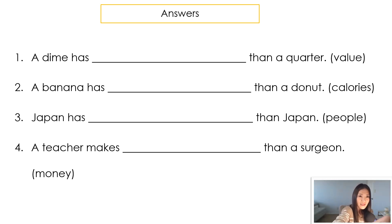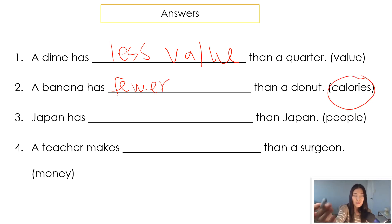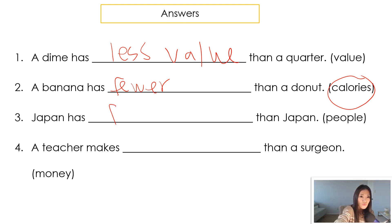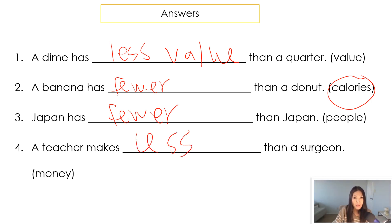Number one: 'A dime has less value than a quarter,' because 'value' is a non-count noun. Number two: 'A banana has fewer calories' — 'calories' is pluralized, so it's a count noun. Number three: 'Japan has fewer people than the United States.' Number four: 'A teacher makes less money than a surgeon,' because 'money' is a non-count noun, so we use 'less.'